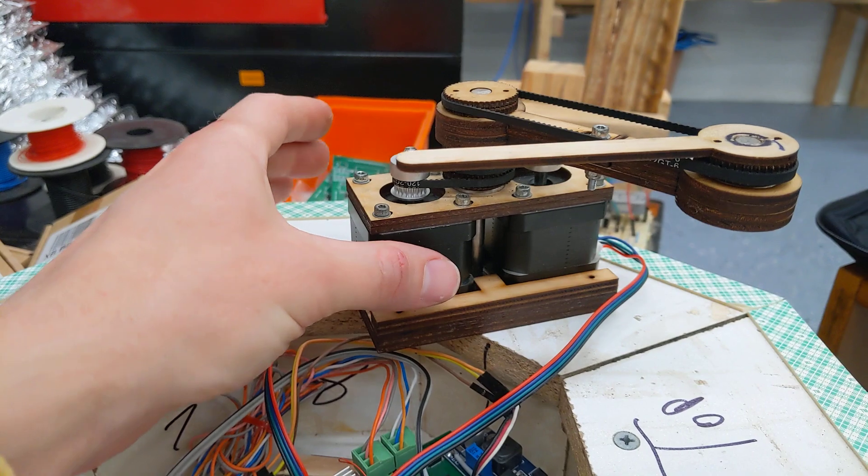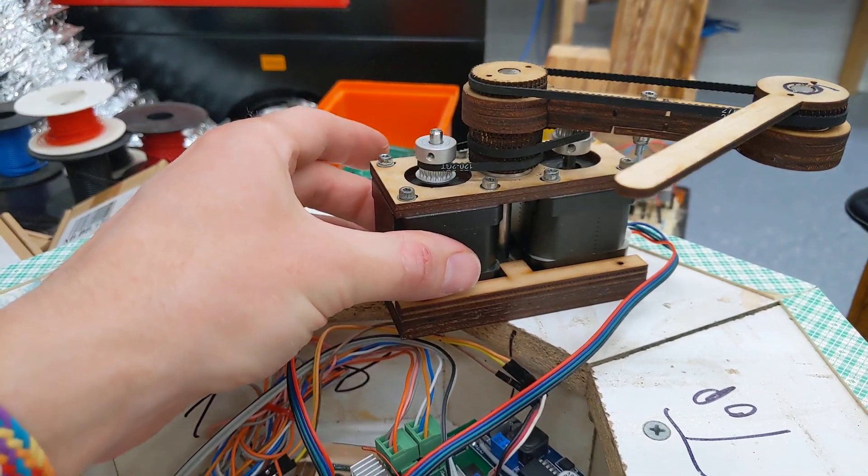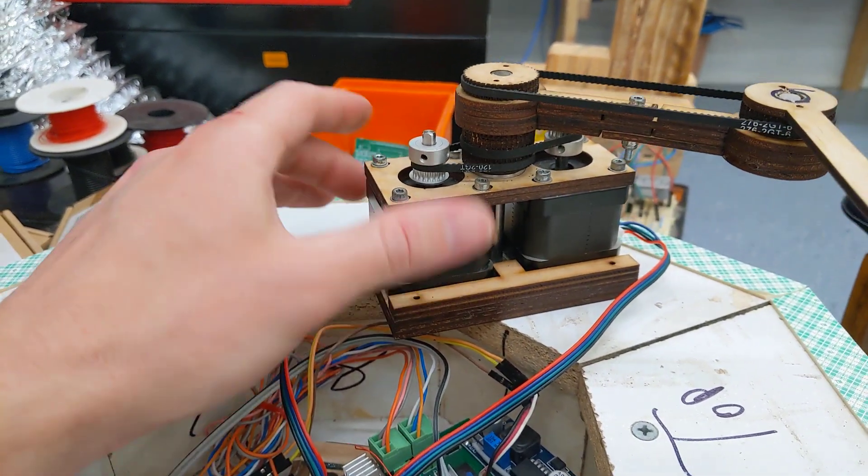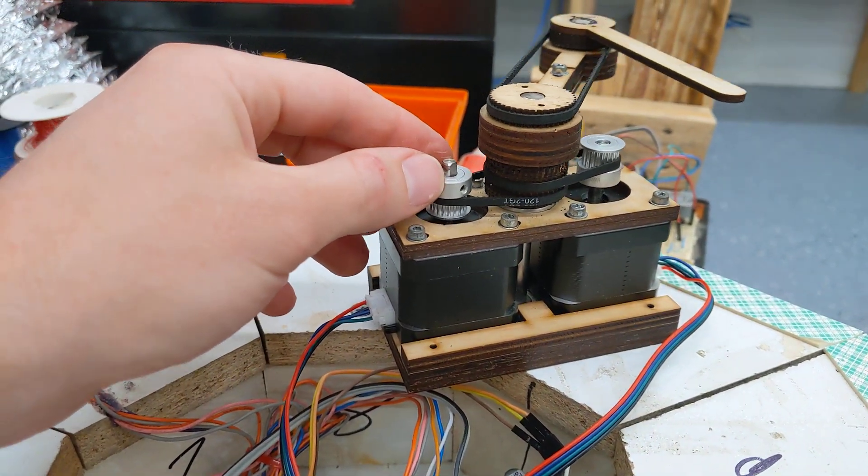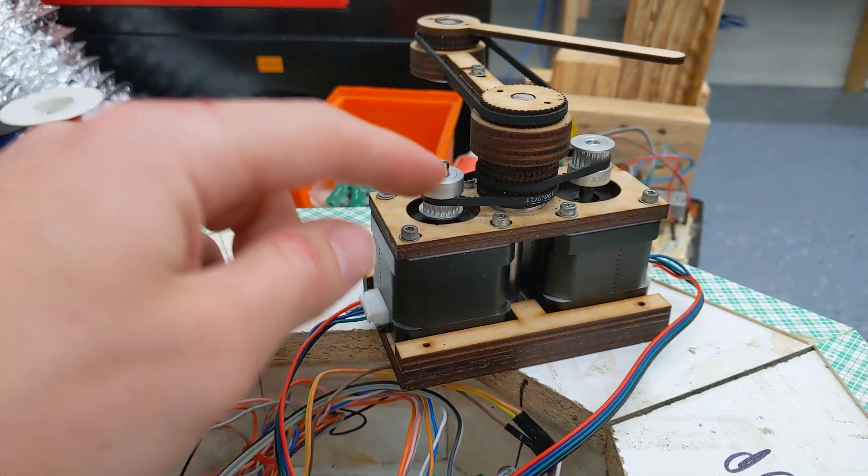I think these steppers are about $13 Australian delivered each in a pack of three. I don't know why they're sold in a pack of three, and these, a pack of 10 for like 10 bucks or something, not very much.